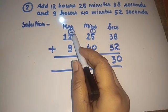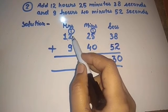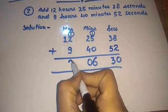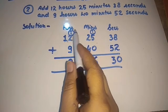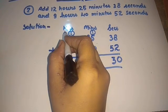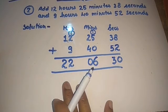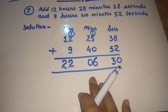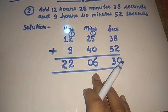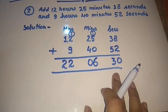Now, 12 plus 9 plus 1 carry equals 22. So our answer is 22 hours, 6 minutes, and 30 seconds.